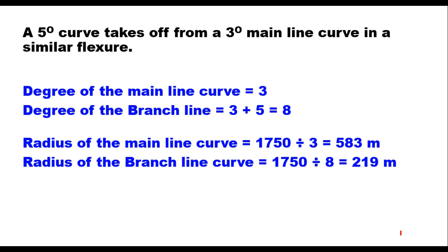For example, a 5-degree curve takes off from a 3-degree main line curve in similar flexor. The degree of the main line curve is 3, and the degree of the branch line is 3 + 5 = 8, since the 5-degree curve takes off from the 3-degree main line curve. The resultant degree is 8. The radius of the main line curve is 1750/3 = 583 m, and the radius of the branch line curve is 219 m.